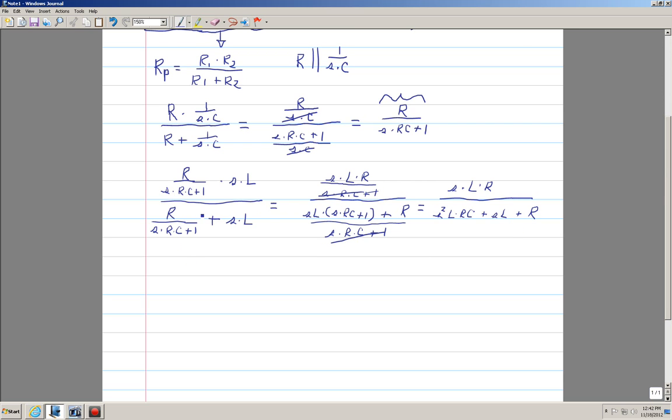So now we know that the impedance, looking at the circuit, it's supposed to be SL over S squared LC plus SL plus R.